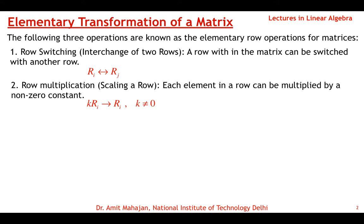The second operation is scaling of a row, or row multiplication. Each element in a row can be multiplied by a non-zero constant k, and the impact is on the i-th row. For example, if R2 is multiplied with 5, then every element of the second row is multiplied by 5. We can only multiply by a non-zero constant.